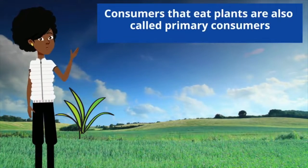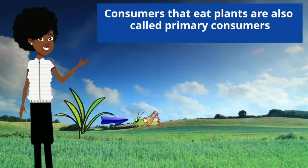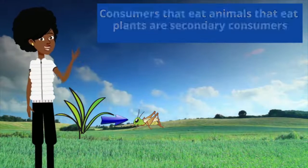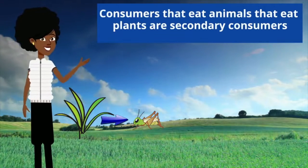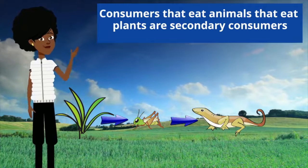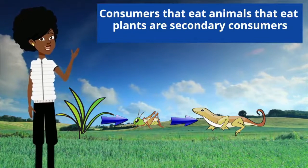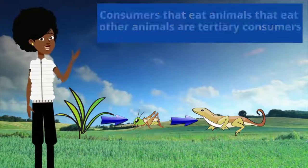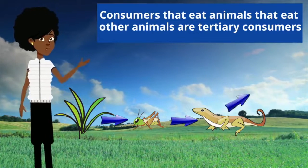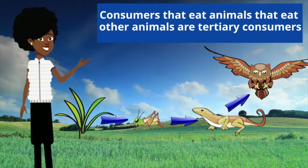Consumers that eat plants are also called primary consumers. Consumers that eat animals that eat plants are secondary consumers. Consumers that eat animals that eat other animals are tertiary consumers.